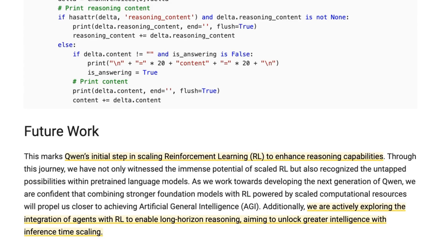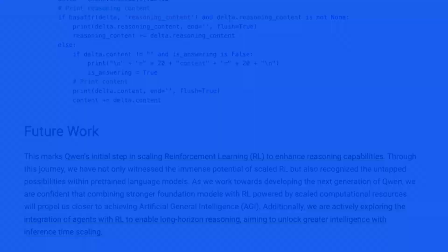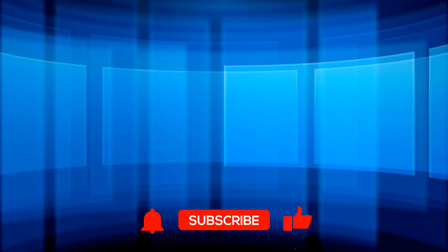I think this is an important release if you're interested in local reasoning models. A lot of people claimed they were serving the full DeepSeek R1 locally when really they were serving a distilled version — which is fine, but it's not the full model. With QwQ 32B you can actually run the full version, and if you have enough compute you don't even need the quantized version. For anyone who's been trying the distilled DeepSeek R1s, definitely take a look at QwQ 32B — it really seems to beat all the distilled reasoning models out there, and with the exception of proprietary models like O3 mini or Gemini Flash Thinking, it's probably one of the best reasoning models you can actually run locally. As always, if you found the video useful please click like and subscribe. Bye for now.